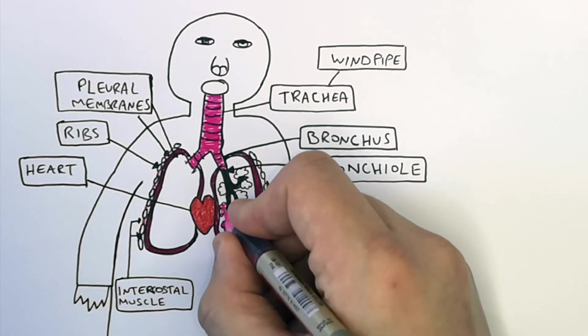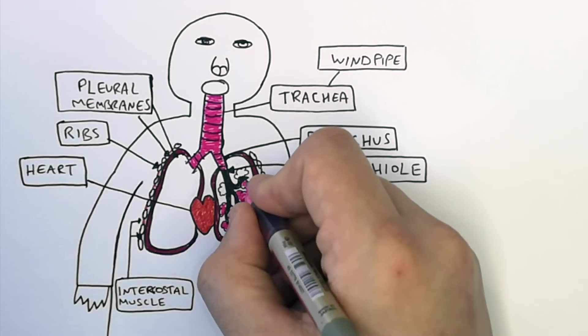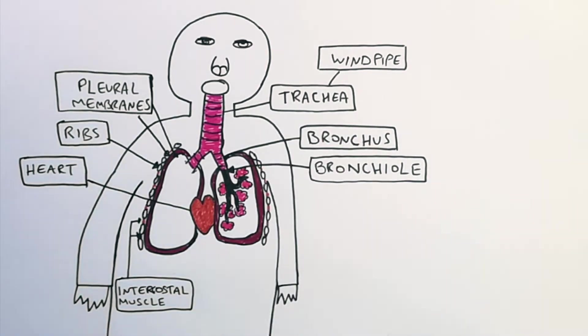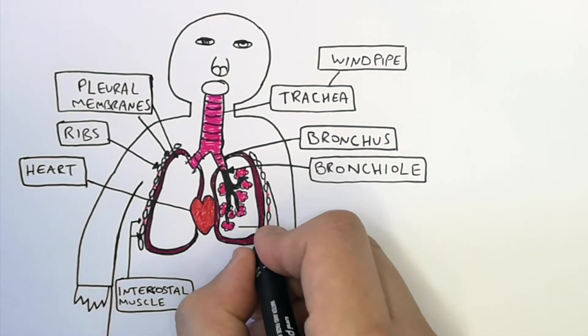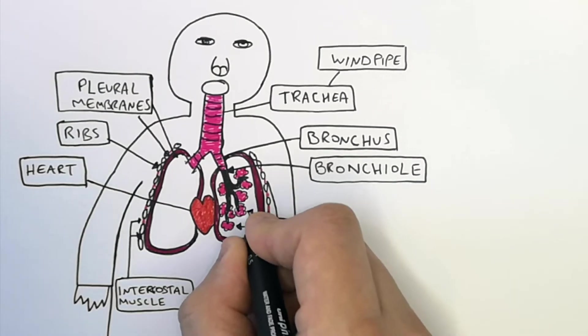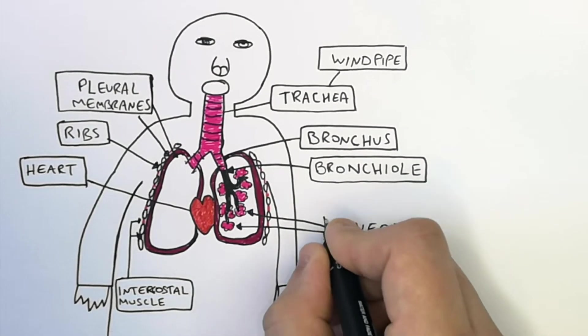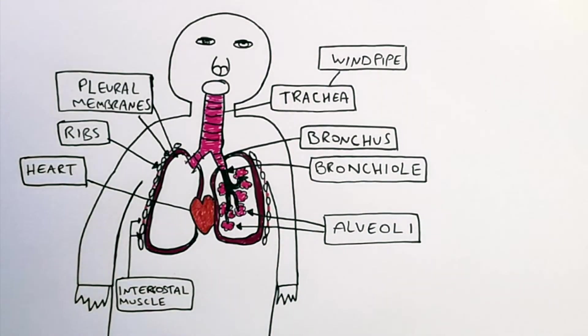Each air sac that I'm now drawing is called an alveolus. An alveolus is one air sac. But we have 600 million alveoli. Alveoli is the plural for alveolus. So these air sacs are called alveoli. Alveoli is where gas exchange happens.